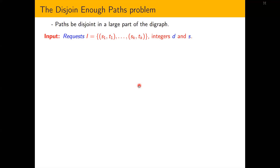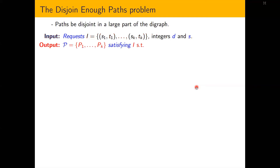We introduce a new relaxation for the directed disjoint path problem that considers a global congestion metric on top of a local congestion metric. In the disjoint in-off path problem, the idea is to find a collection of paths that is disjoint or well-behaved in the whole graph. We receive as input a set of requests S1T1 to SkTk together with two integers, D and S. The goal is to find a collection of paths such that at least D vertices of the digraph occur in at most S paths of the collection.